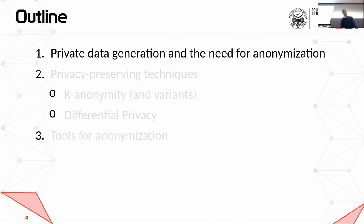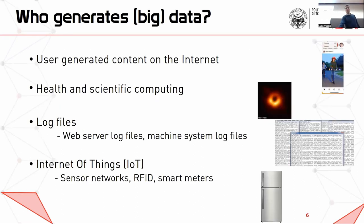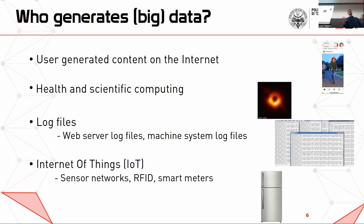So first, a ten-minute introduction on why we need anonymization. Nowadays we have big data everywhere, and big data is generated in different ways — user-generated content on the internet. This might be explicit generated content, like posts on Facebook, or maybe also implicit. Just visiting some website is already some information that a user is generating, even without explicitly writing something.